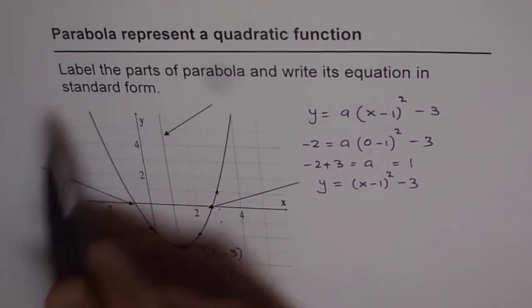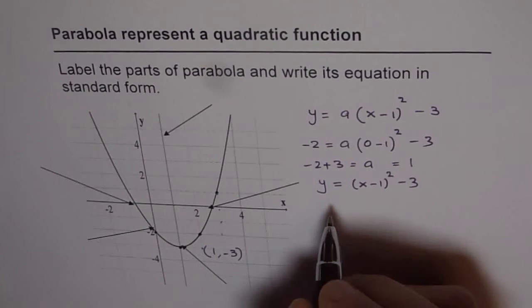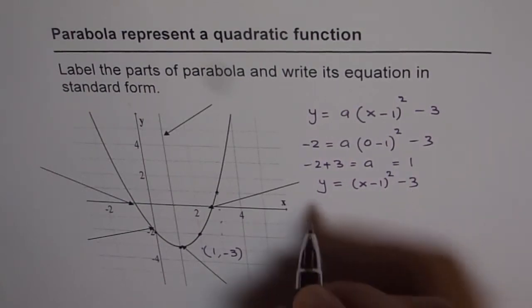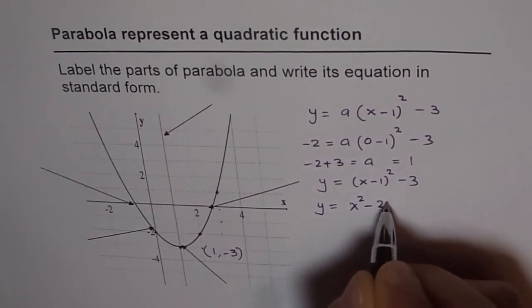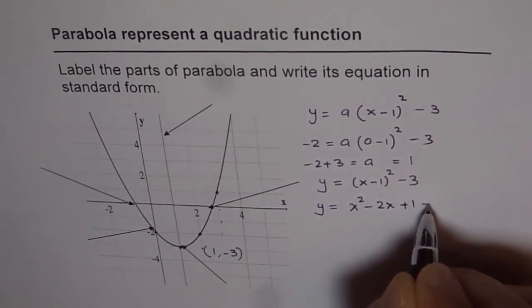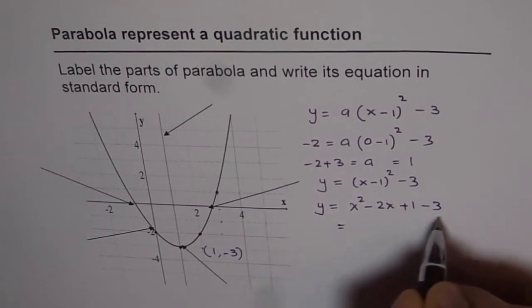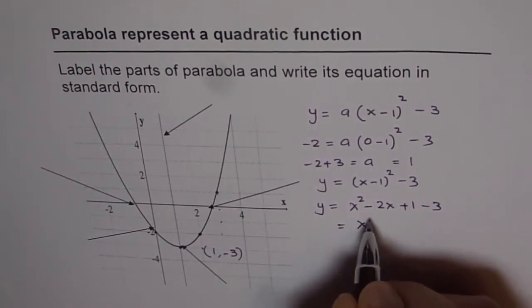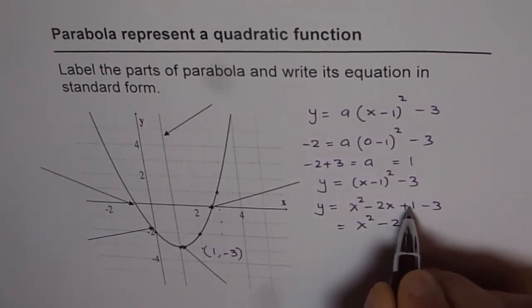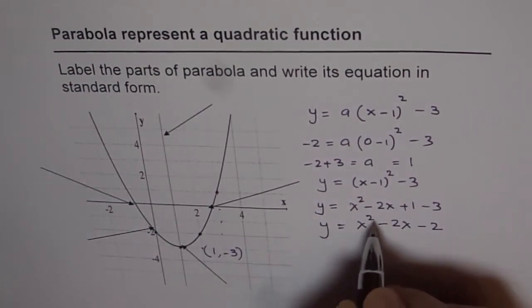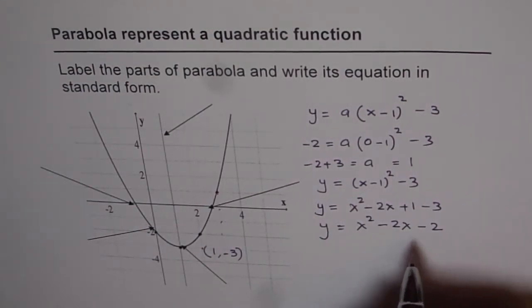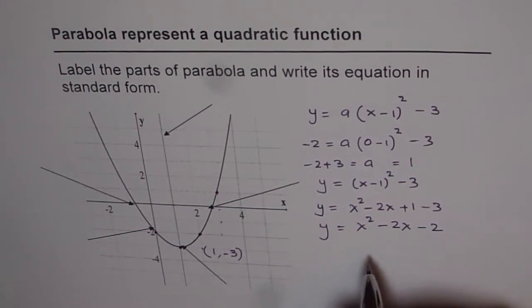Now the question is to write it in standard form. How do we do that? So we need to expand this. We get y equals to x square minus 2x plus 1 minus 3. And simplify it. Combining these terms, we get x square minus 2x and that is minus 2. So y equals to x square minus 2x minus 2 is the equation of this parabola in standard form. So that is how you can complete this question.